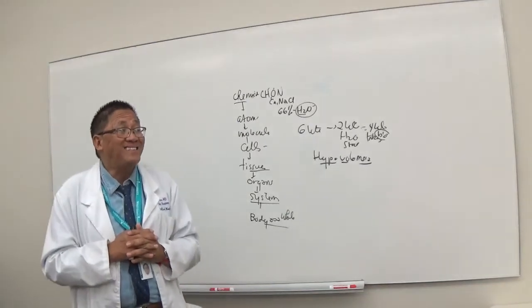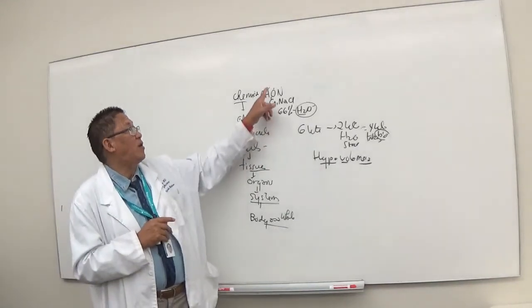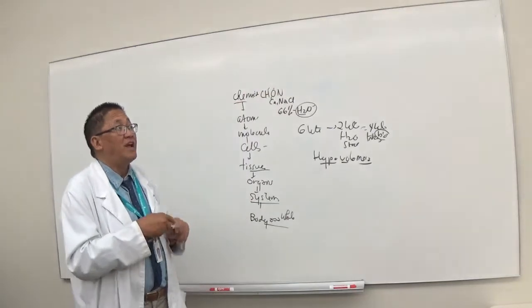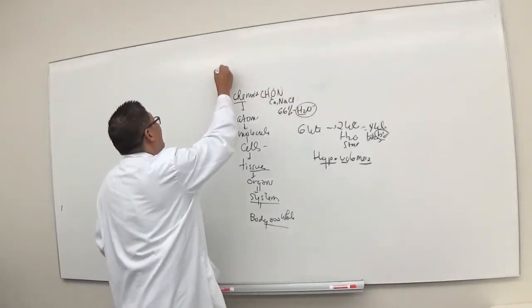And we're going to talk about acids. An acid is a substance that can donate what? A hydrogen ion. For example, HCl. What is HCl class? Hydrochloric acid.